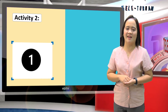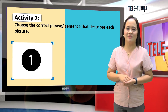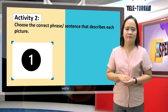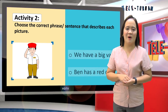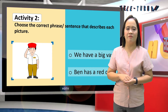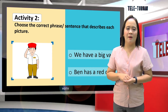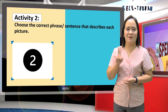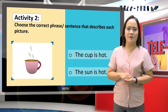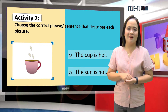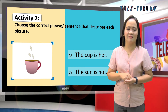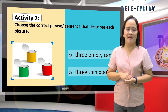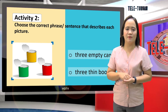Now let us proceed to our next activity. Choose the correct phrase or sentence that describes each picture. Number 1: we have a big van, or Ben has a red cup. Number 2: the cup is hot, or the sun is hot.